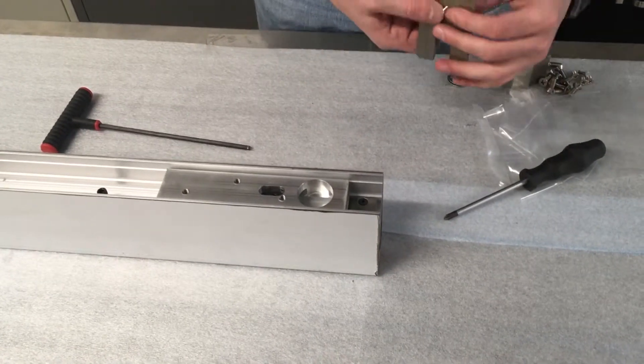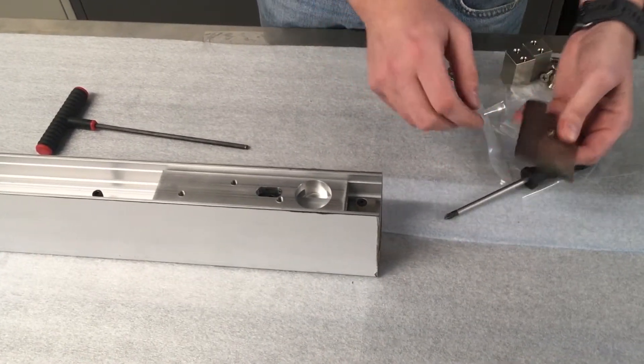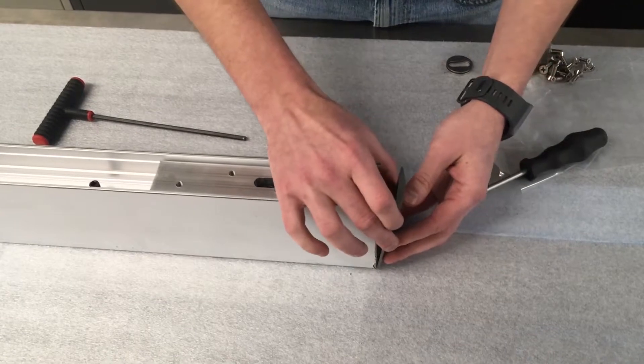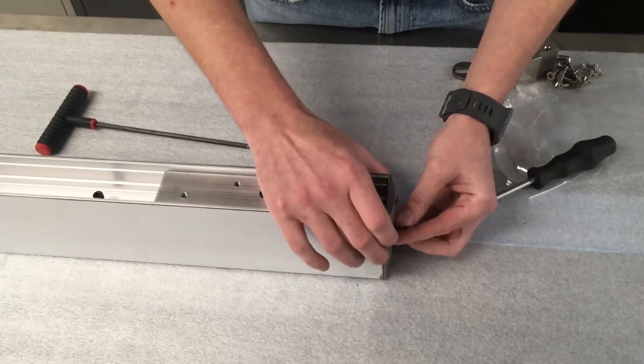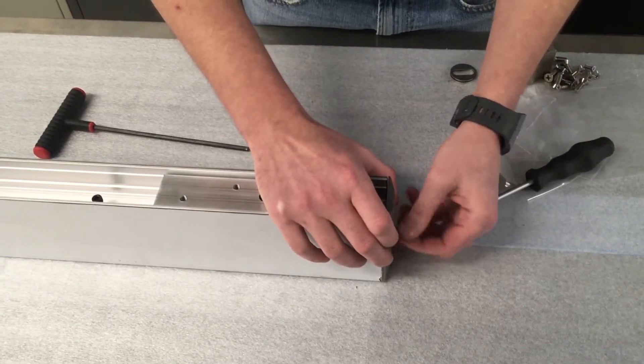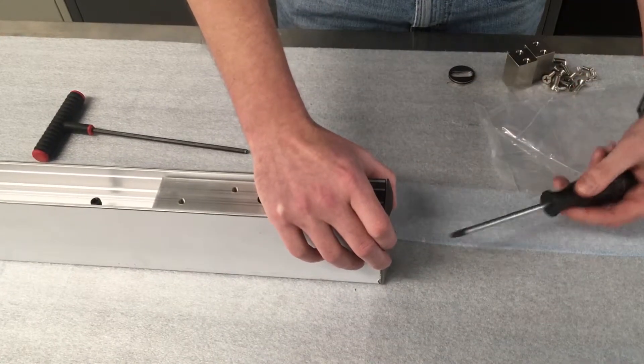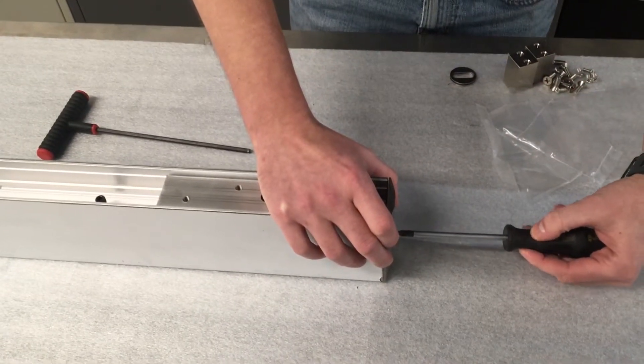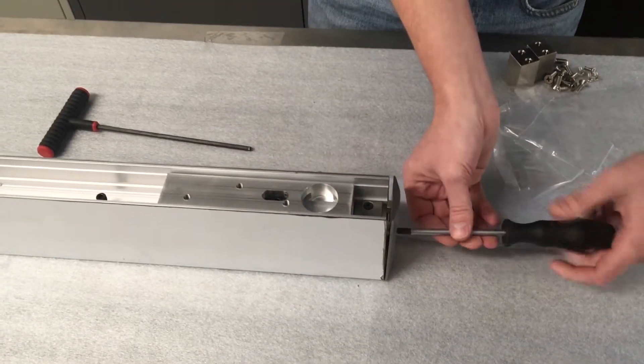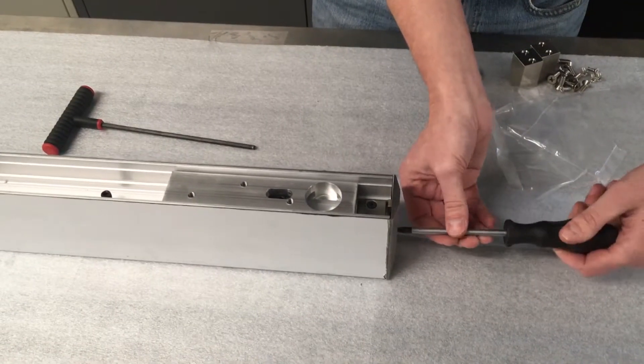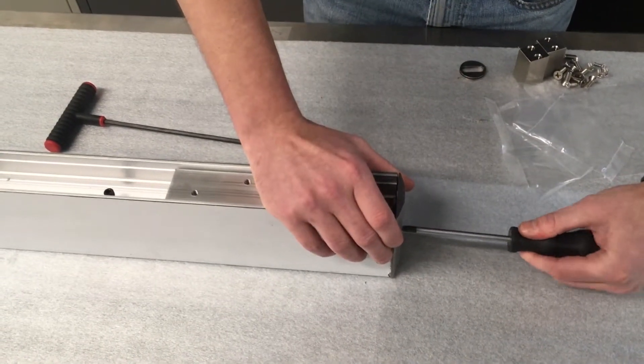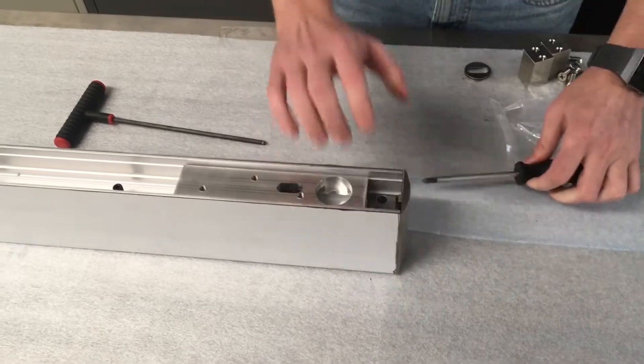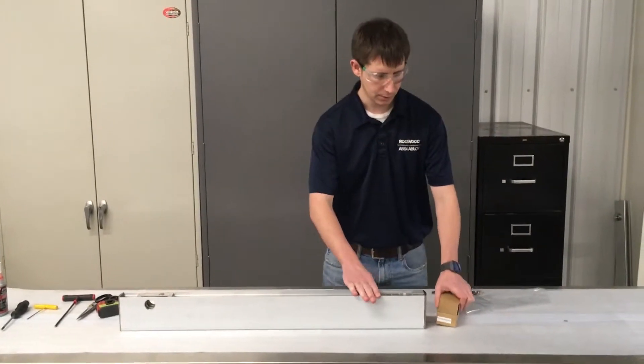After that, we will want to install the end cap back onto the end of the door rail. We will start the end cap screw and then using a Phillips screwdriver tighten the end cap onto the end of the door rail.